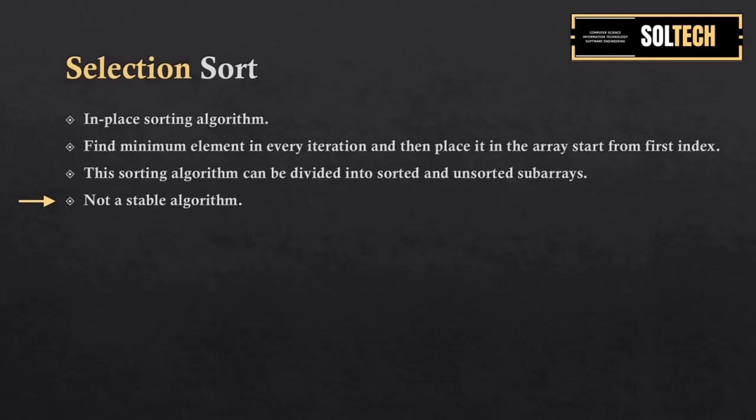Selection sort is not a stable algorithm. This is because in a stable algorithm, two objects or values with equal keys appear in the same order, but in selection sort that is not possible, so selection sort is not a stable algorithm.